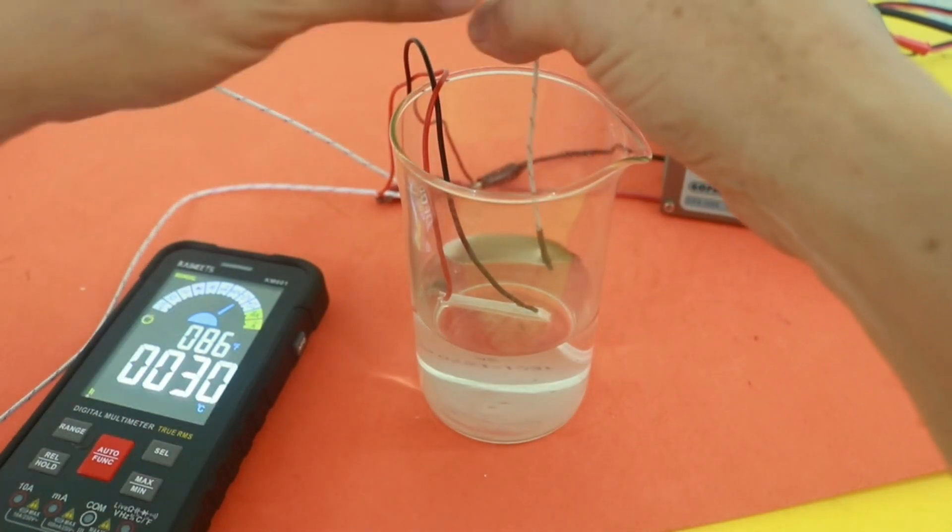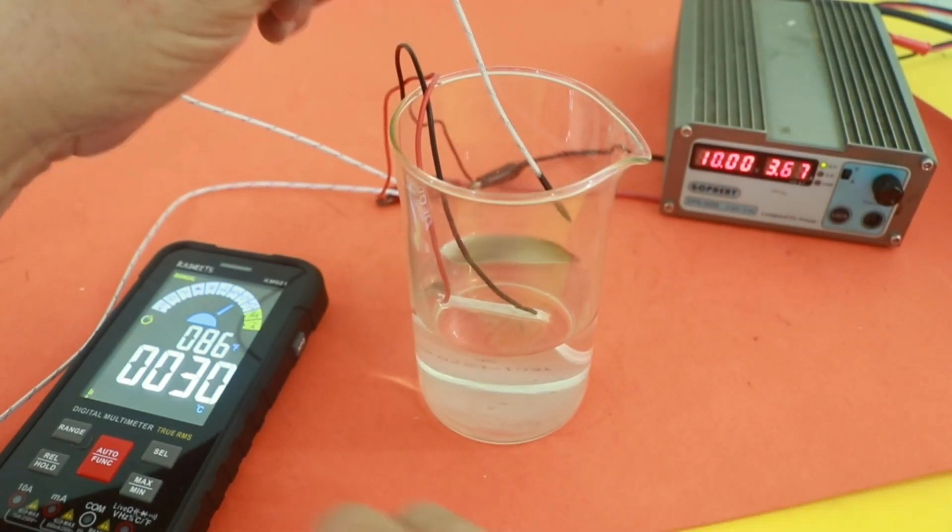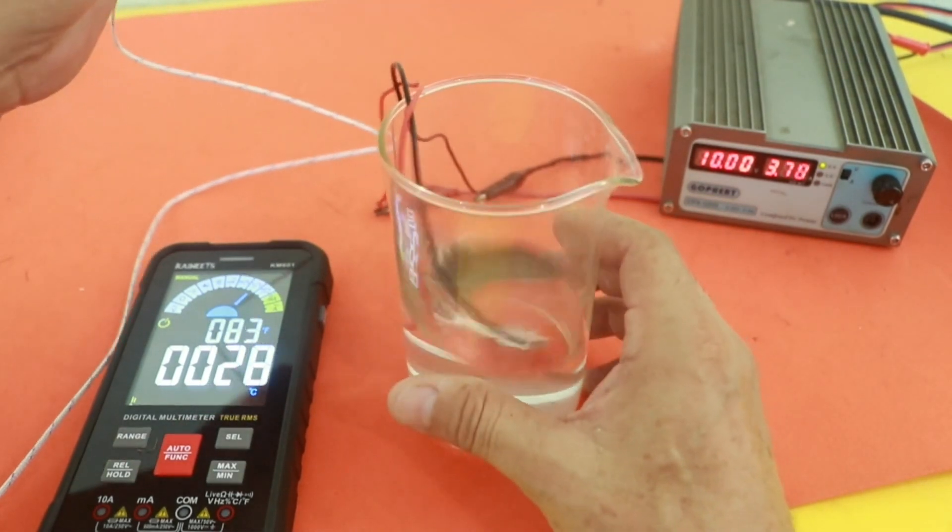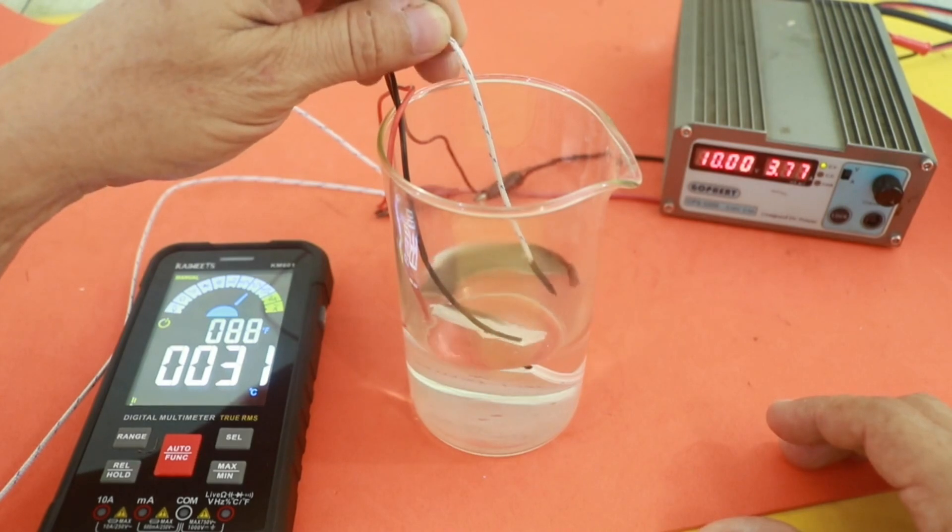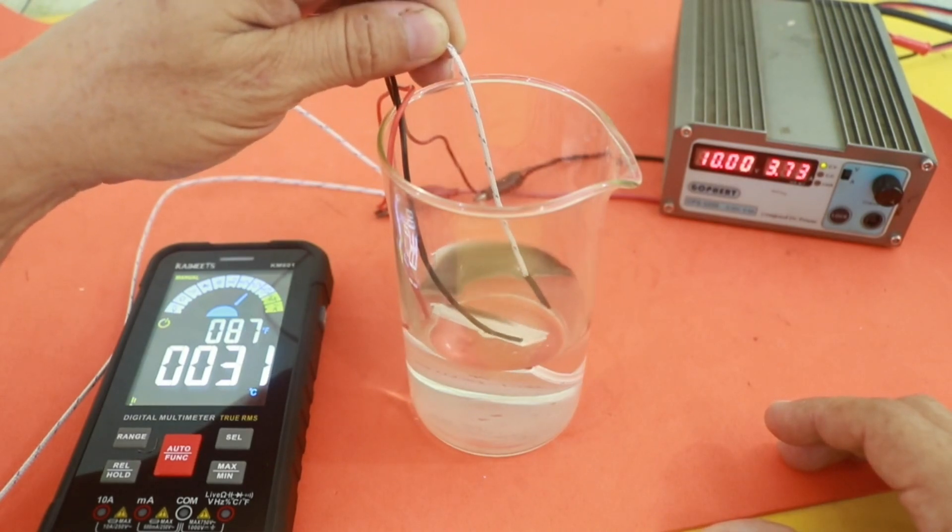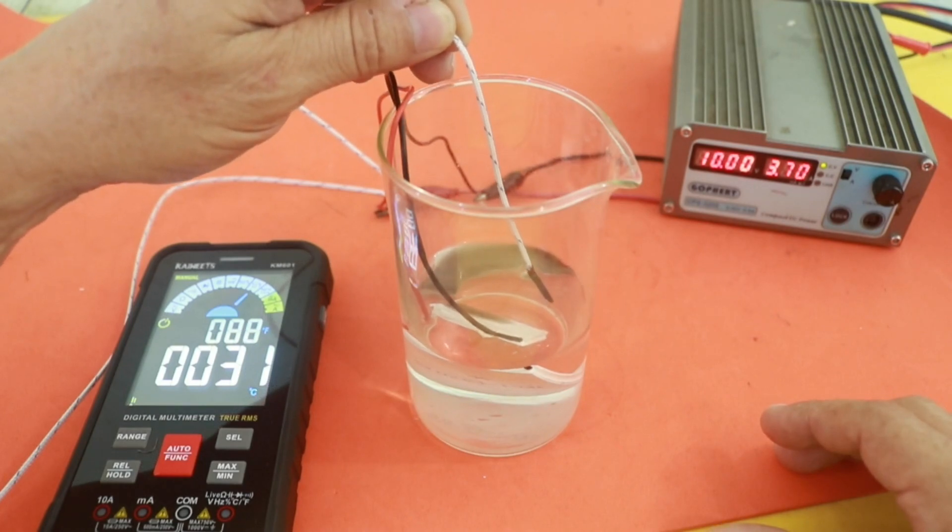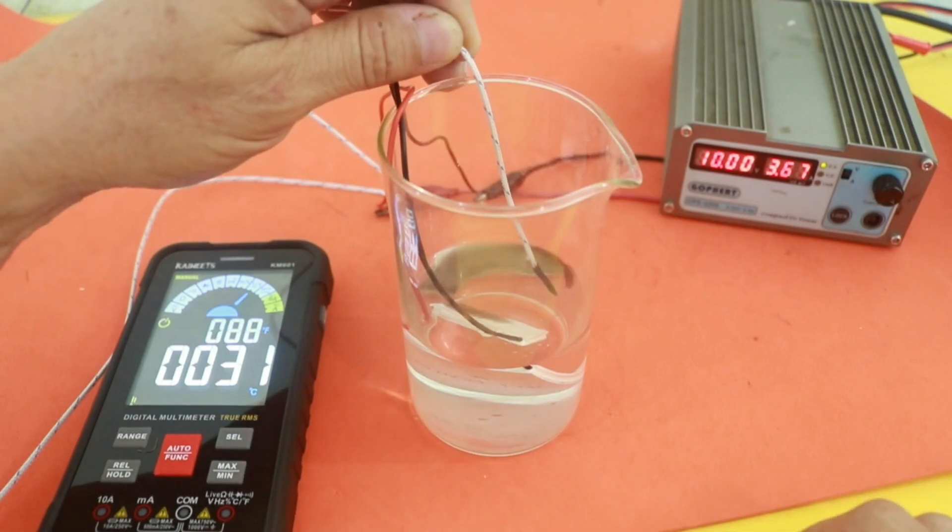And check the temperature. We are at 30 degrees. Remember that water has a very large heat capacity. That means that it can take a lot of energy before the temperature starts to rise. That is why water is used as a refrigerant, of course. But we are now at 31 degrees.